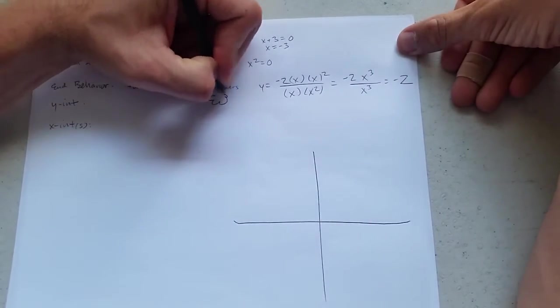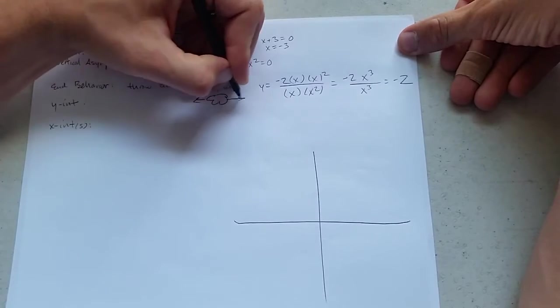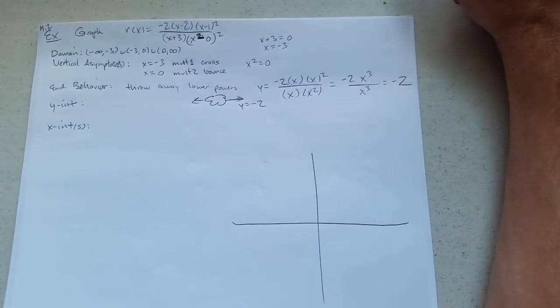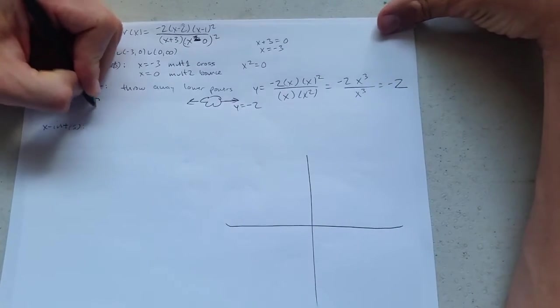y equals negative 2. So our end behavior, horizontal line, y equals negative 2. All right, y-intercept. How do we get that?